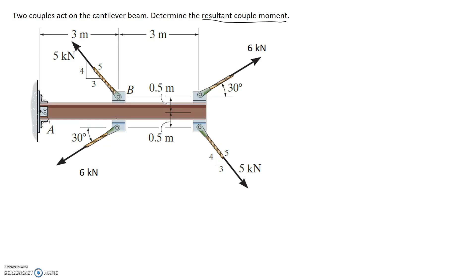The first thing to remember is that the moment for a couple, which I'm calling MC, is equal to the force of the couple multiplied by the separation distance, which I'm calling DC.